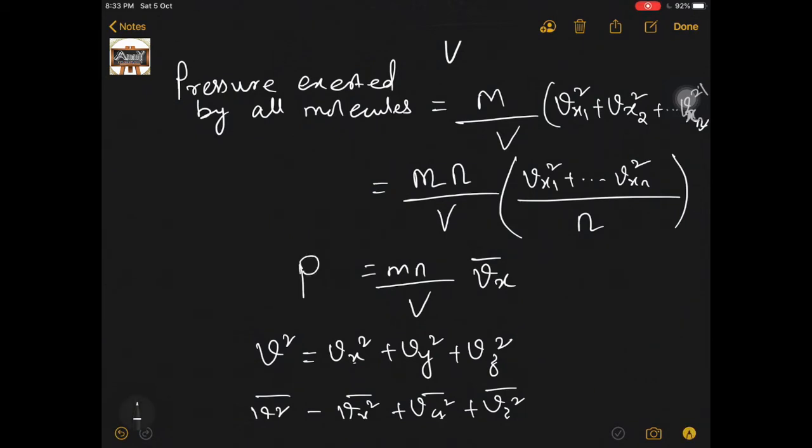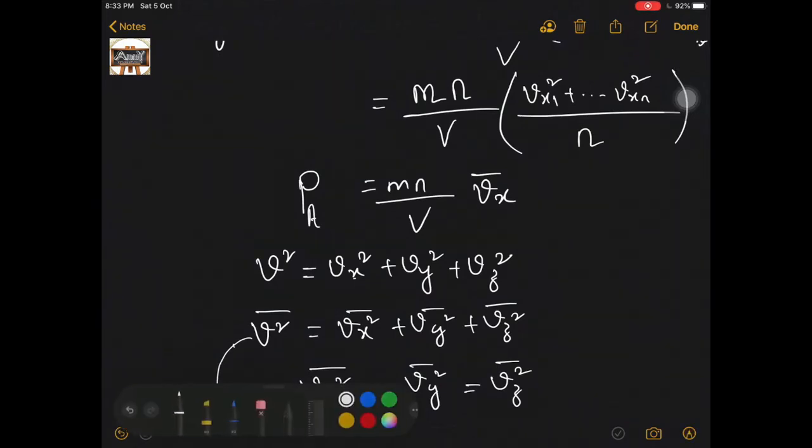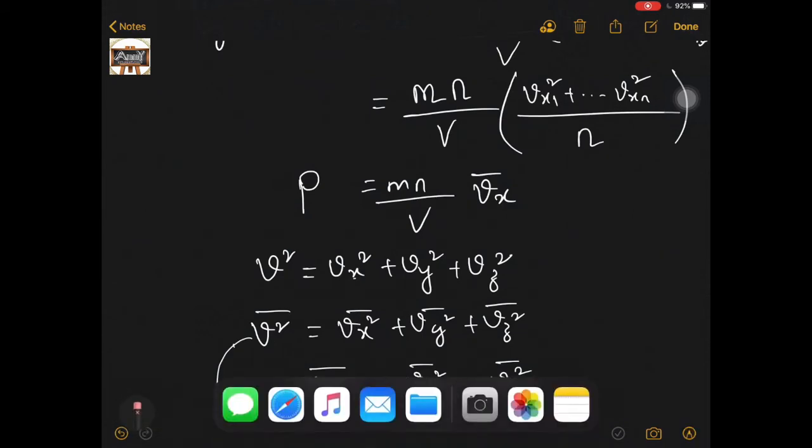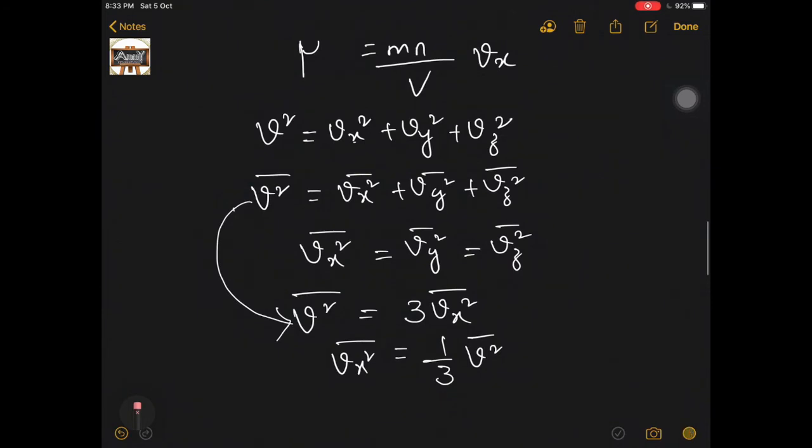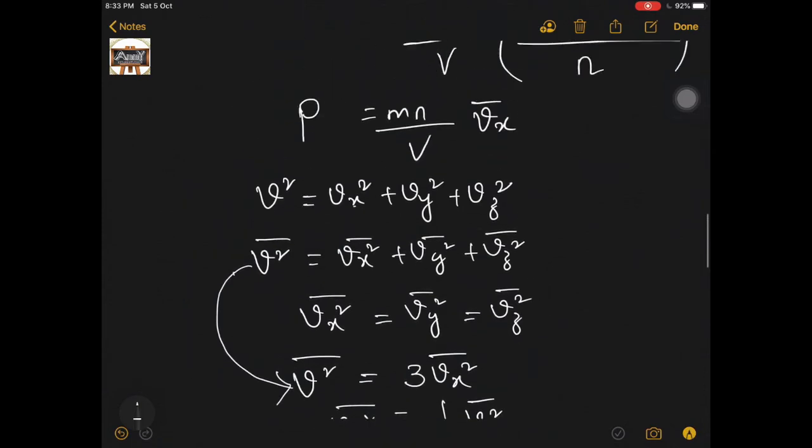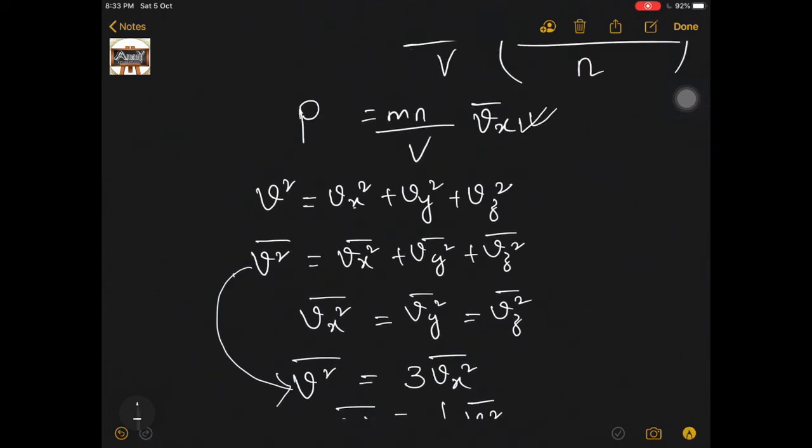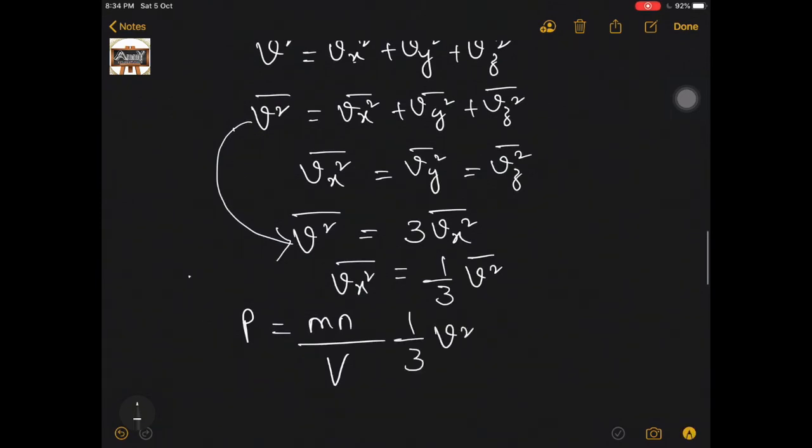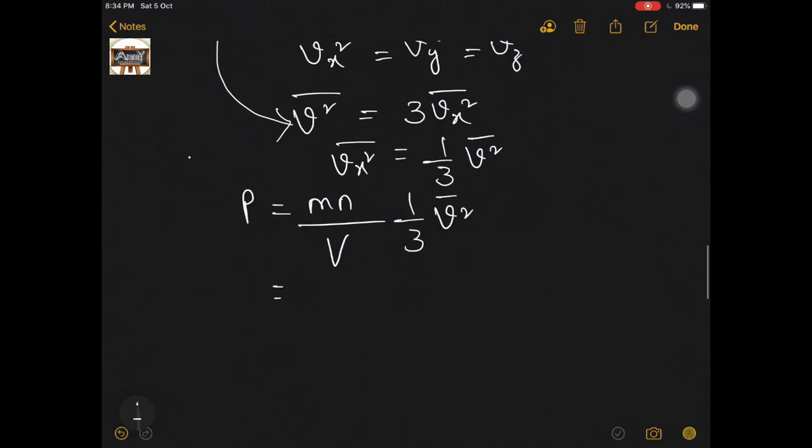Let me replace it with the symbol P for pressure. So P is equal to (m·n/V)·V̄x². I will replace V̄x² with (1/3)·V̄². So here I am arriving at my reduced expression: pressure P = (1/3)·(m·n/V)·V̄². V is the volume of the vessel. m·n is the mass of all molecules.